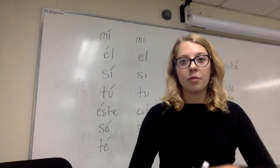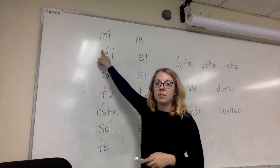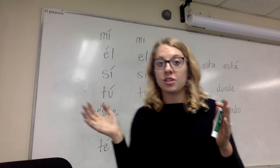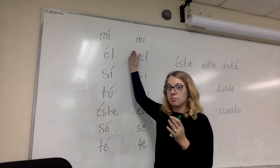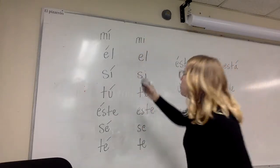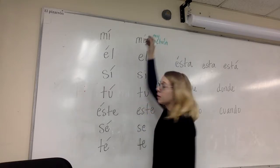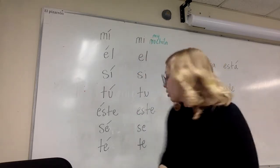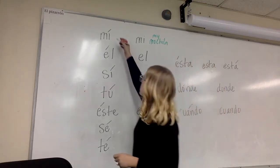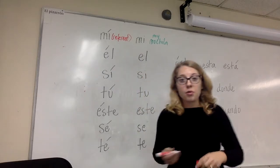Today we're actually going to be talking about why we use accents in words that look the same. If you notice, I've got 'mí' with an accent and 'mi' without an accent. You'll notice that it has nothing to do with the pronunciation — I still pronounce it 'mi' either way. However, the difference is what it means. 'Mi' without an accent is as in 'mi mochila,' meaning 'my backpack,' whereas 'mí' with an accent is like 'a mí me gusta' or 'para mí,' used as a referent pronoun.